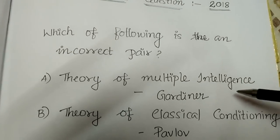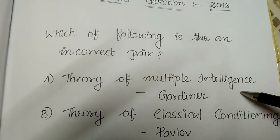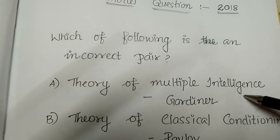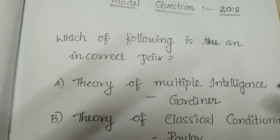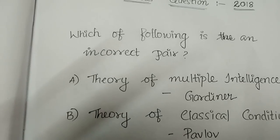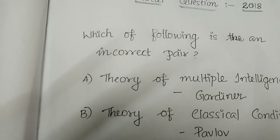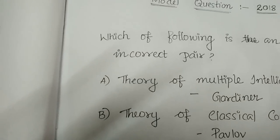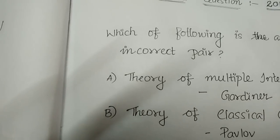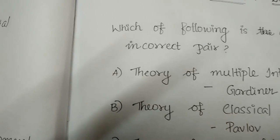We are going to discuss the theory of Multiple Intelligence — Howard Gardner. In the next class, we will cover Ivan Pavlov's Classical Conditioning, the theory of Meaningful Reception, the theory of Psychosocial Development, and the theory of Moral Development.